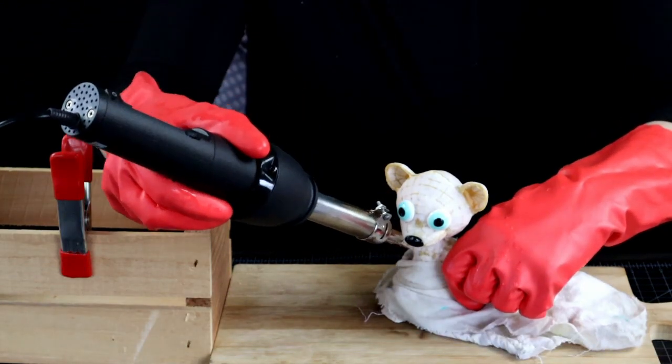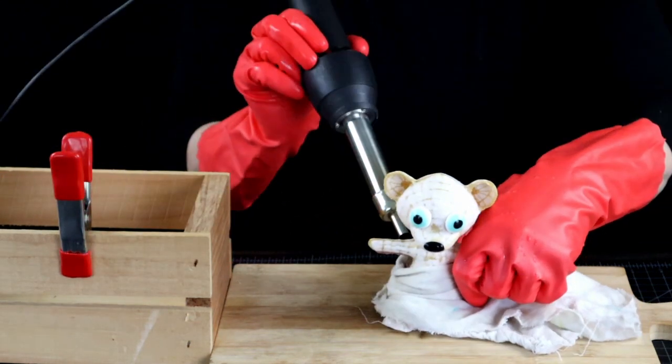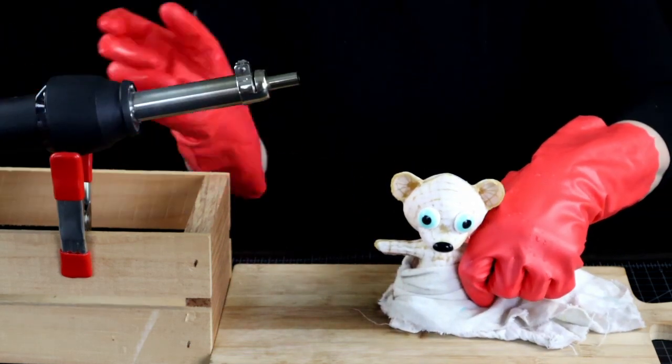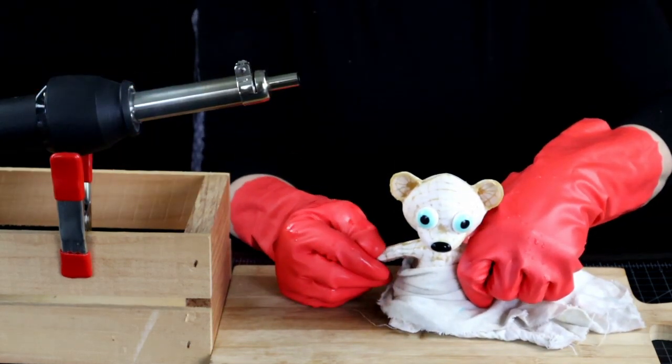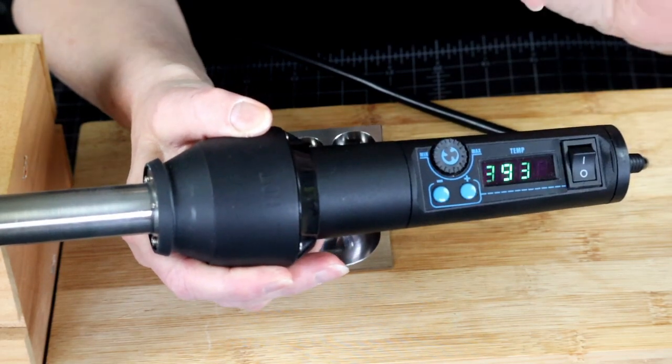I personally prefer a heat gun to a torch. You can way too easily over melt your project with a torch and even set it on fire. Heat guns come with temperature control, flames don't.